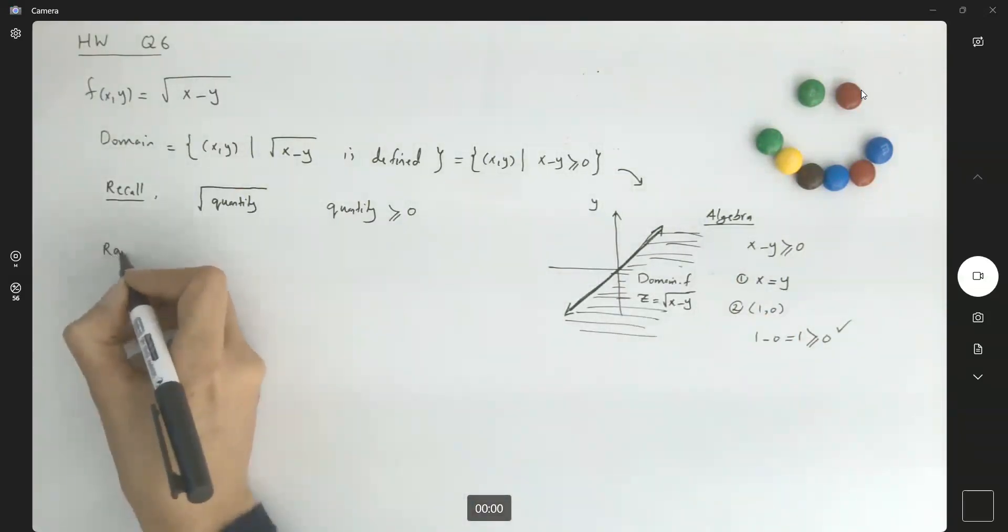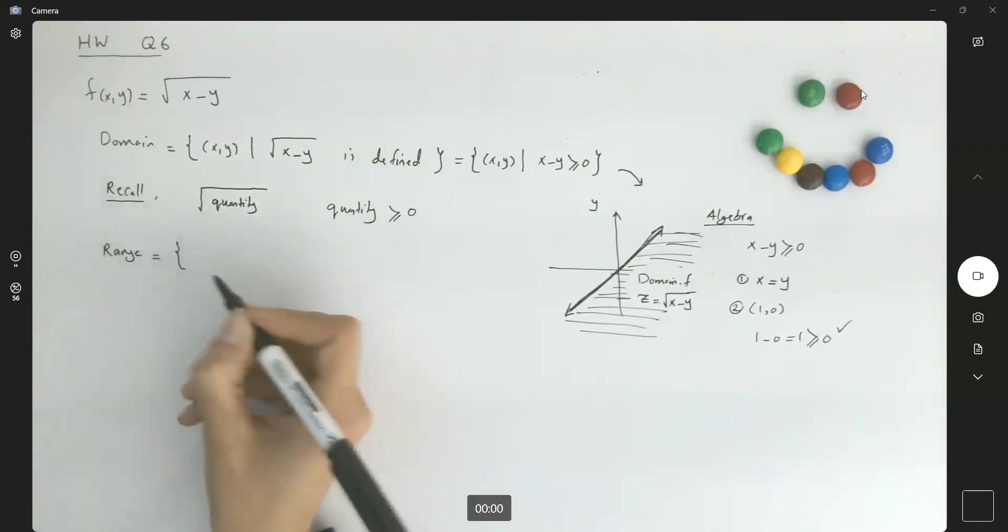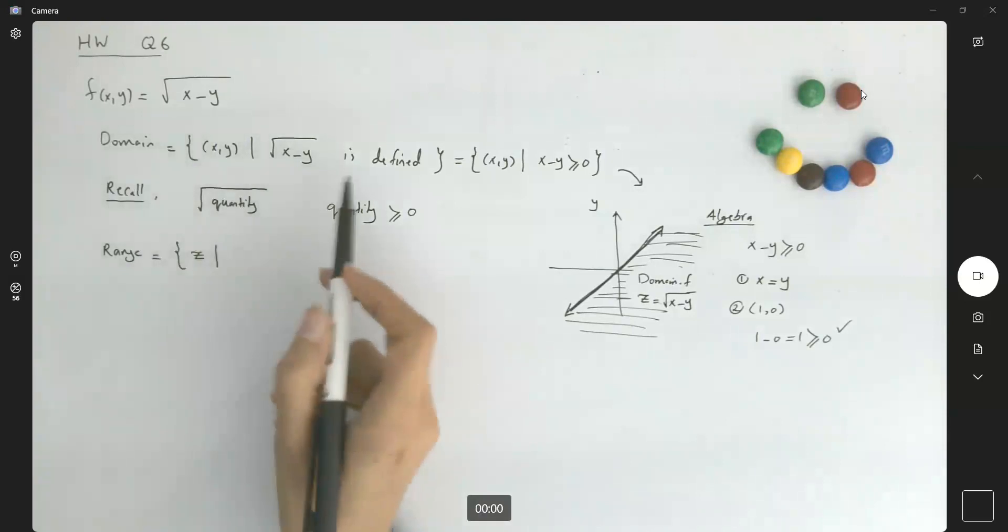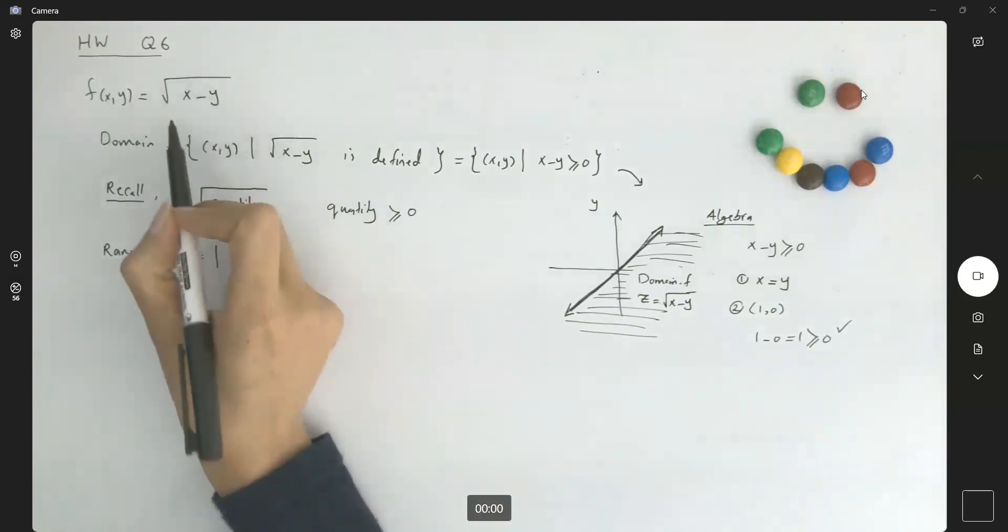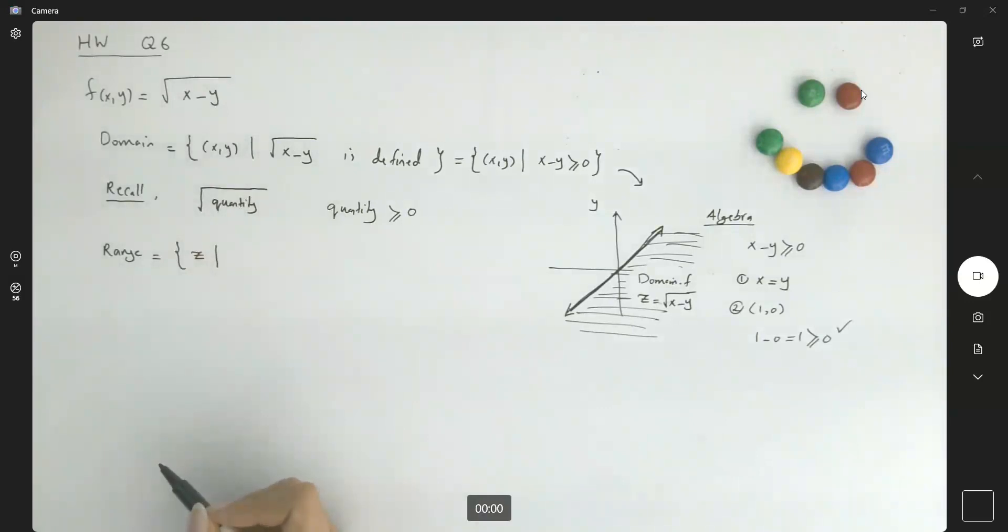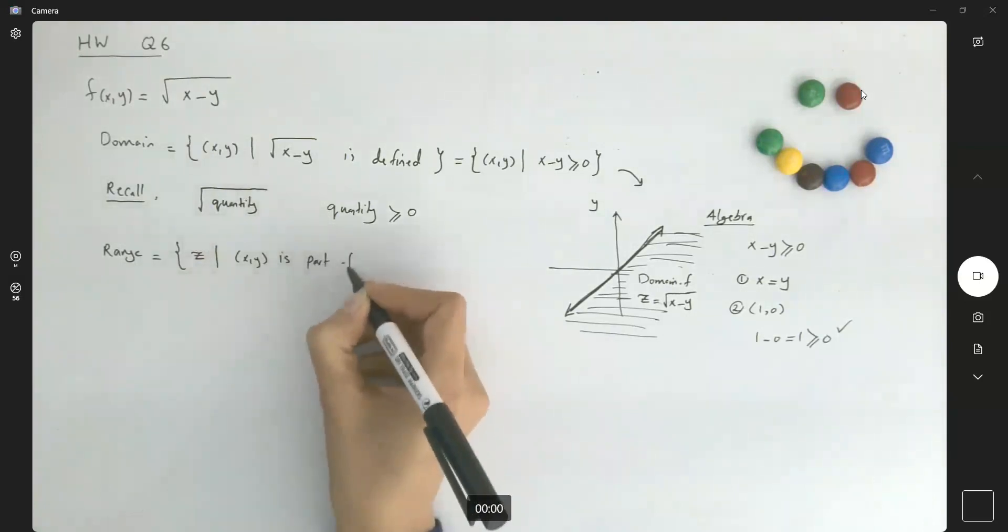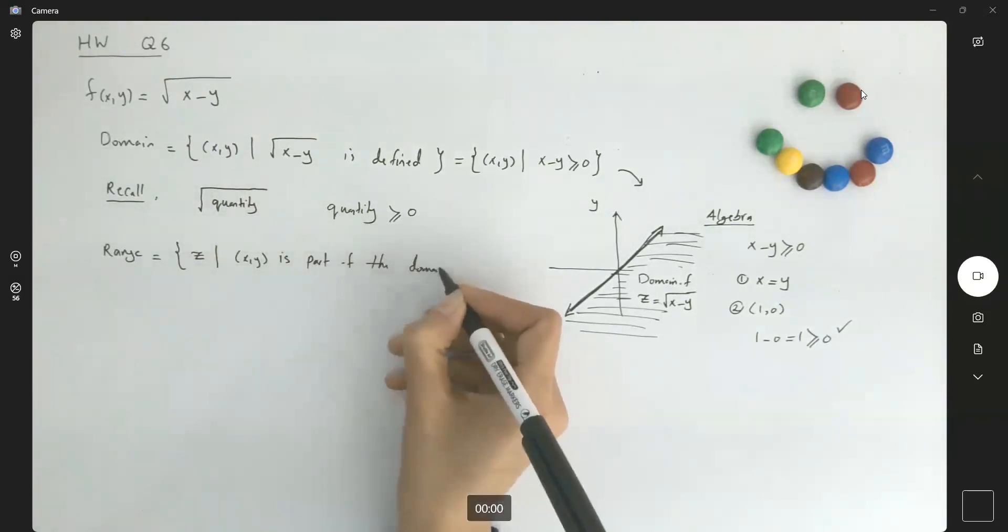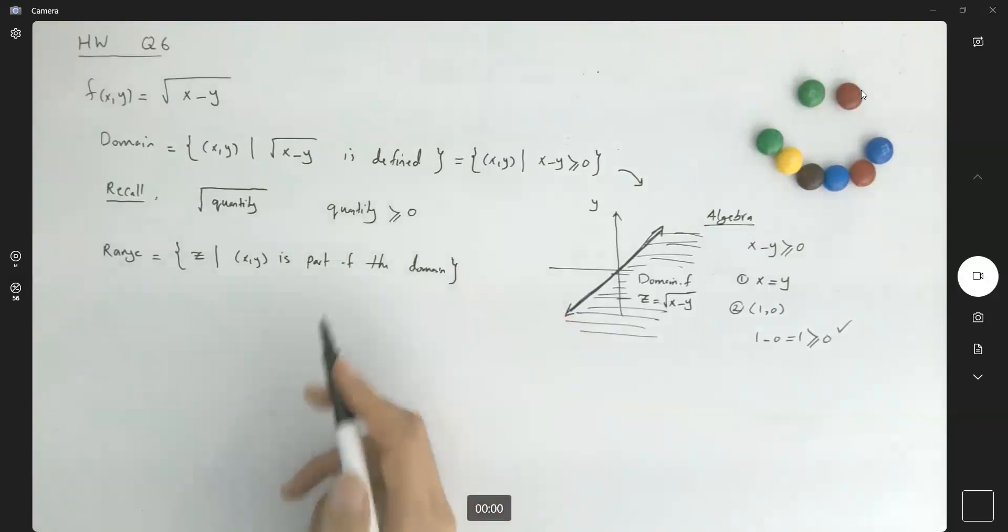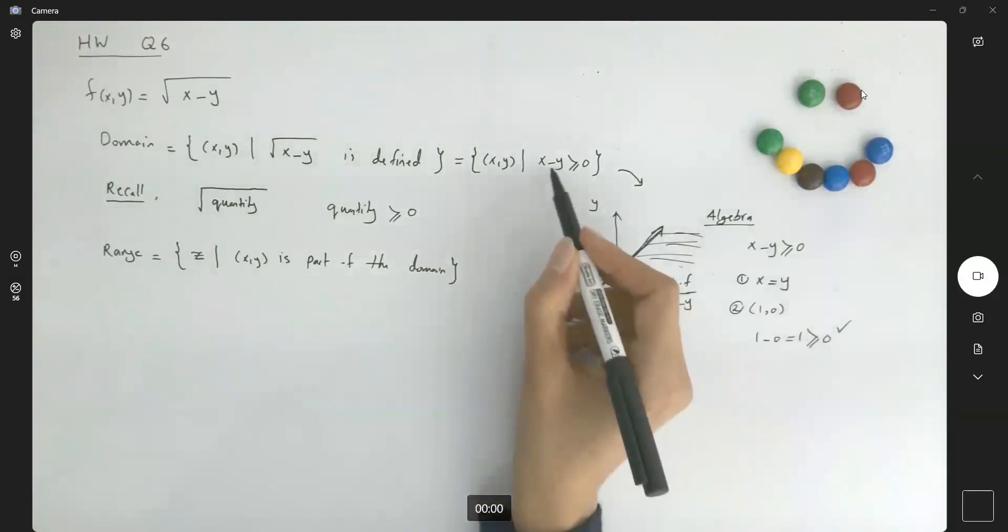Now, what about the range? If somebody asks you to find the range, you're going to say that it's the set of all z values such that you are taking the values from the domain x and y. So take a look at the domain. The x and y values that you can enter are all x larger than or equal to y.